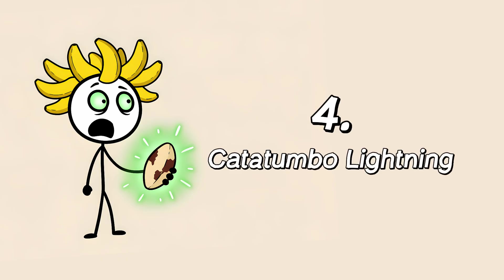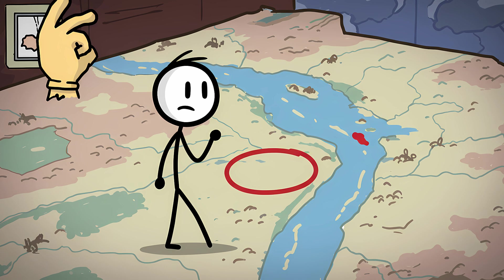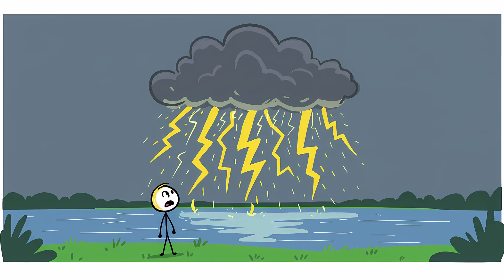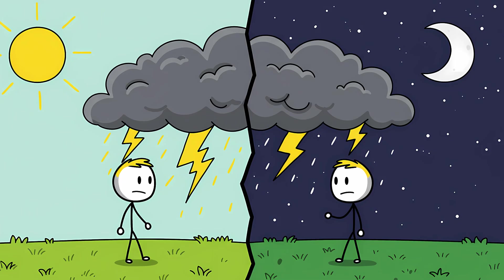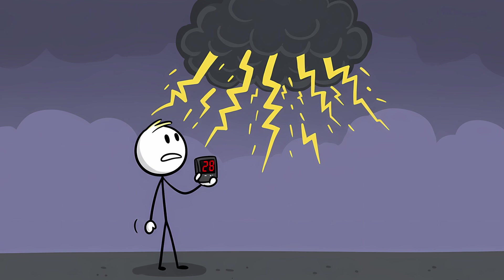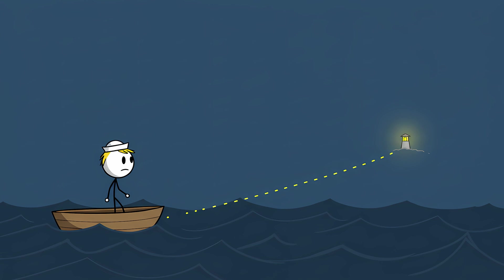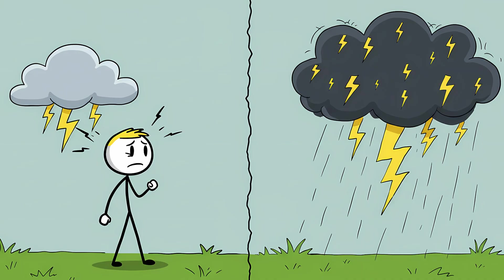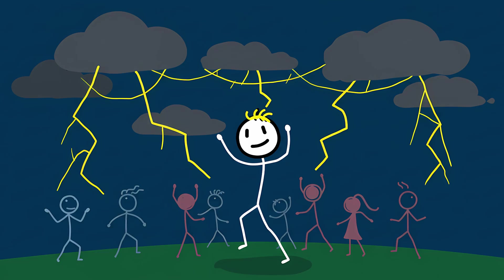Number 4. Catatumbo Lightning. There's a spot in northwestern Venezuela where the Catatumbo River meets Lake Maracaibo that God apparently forgot to turn off. It's home to the most persistent, most concentrated lightning storm on the entire planet. It's not just a storm, it's a permanent atmospheric feature. Known as the Relámpago del Catatumbo, or Catatumbo Lightning. This is a storm that rages for up to 10 hours a night, for as many as 260 nights a year. At its peak, you can see up to 28 lightning flashes per minute. The light is so intense it can be seen from almost 250 miles away, leading sailors to call it the Maracaibo Beacon. This isn't your average thunder and lightning. Much of it is cloud to cloud, creating a silent, flickering, rave-like spectacle that illuminates the night sky.